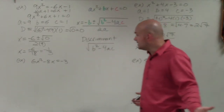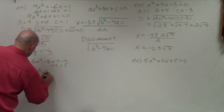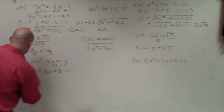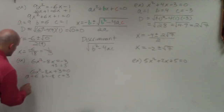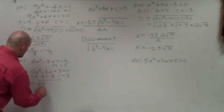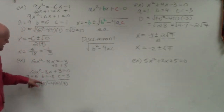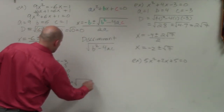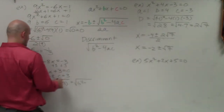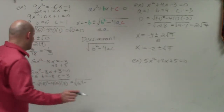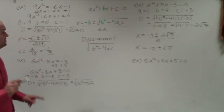In this example, my equation is not set equal to 0, so I add 3 to both sides, giving 6x² − 8x + 3 = 0. So a = 6, b = −8, and c = 3. I'll determine my discriminant first: b² − 4ac = (−8)² − 4×6×3 = 64 − 72.